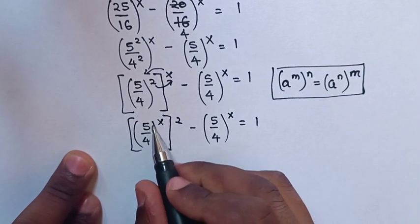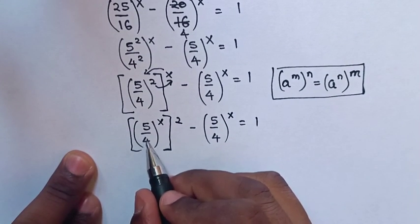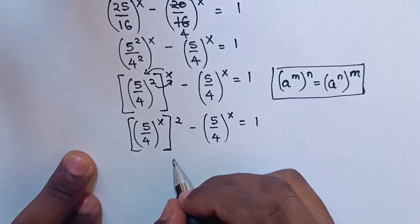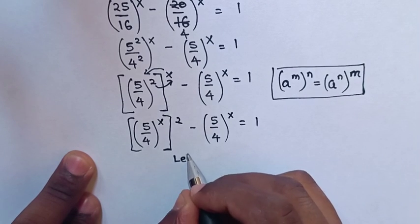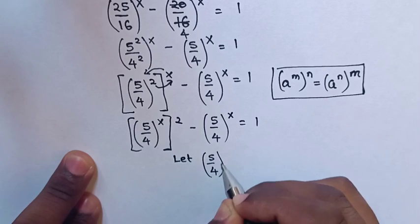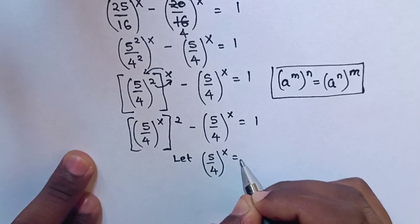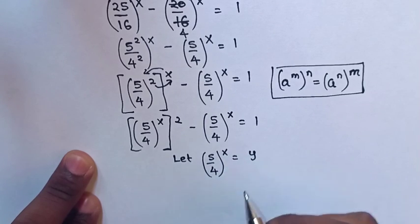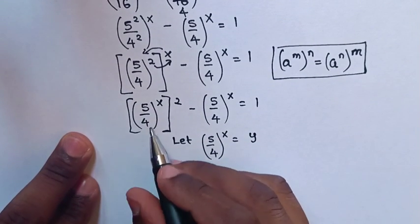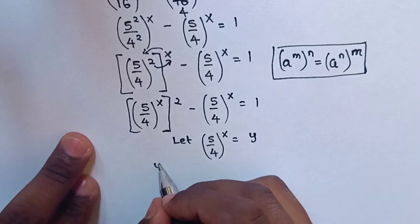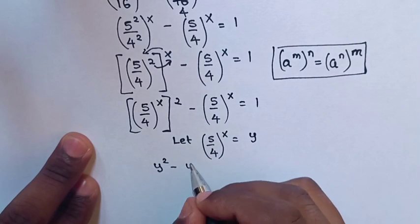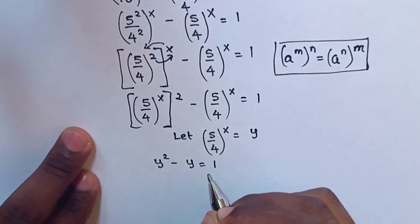Then we can see here (5 over 4) bracket power x is common, so we substitute y in the equation. It will be y squared minus y is equal to 1.